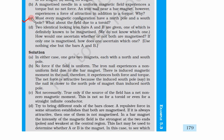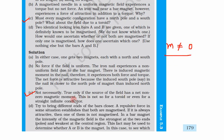The third part: must every magnetic configuration have a north pole and a south pole? Not necessarily. This is true only if the source of the field has a nonzero magnetic moment — that is, vector m is not equal to zero.